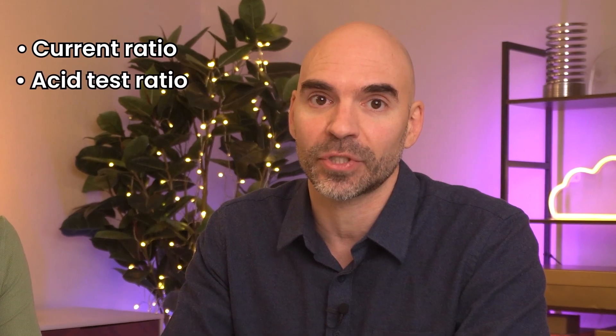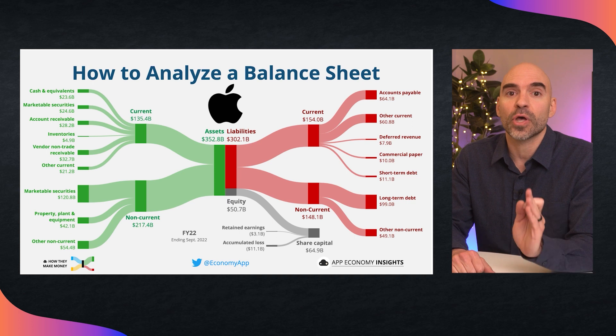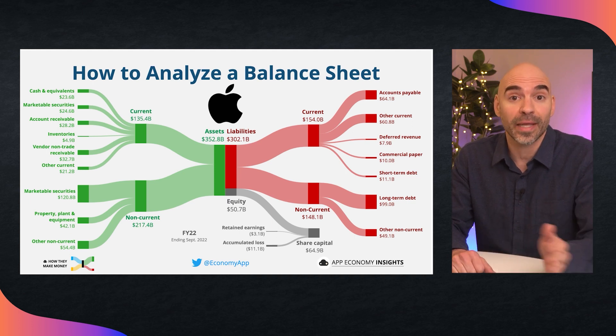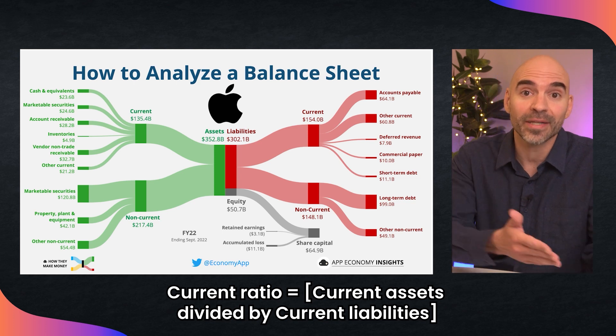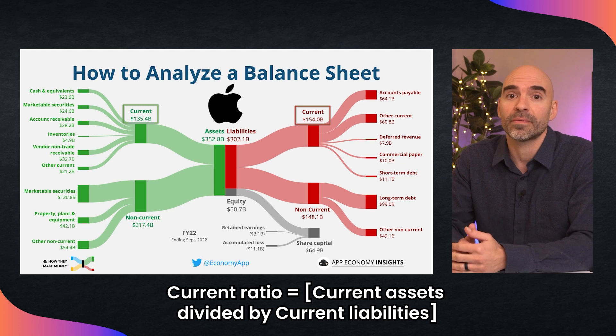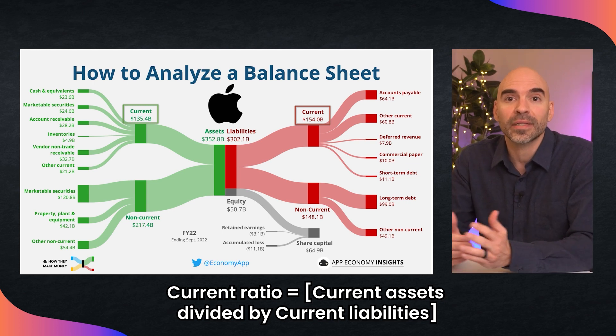First is liquidity. A company with high liquidity will have a strong ability to pay off its short-term debts and a healthy current ratio and asset debt ratio. The current ratio measures a company's liquidity by comparing its current assets to its current liabilities. It's calculated by dividing current assets by current liabilities. Anything around one is considered healthy — the higher, the better. For Apple, that number was healthy, slightly below one.